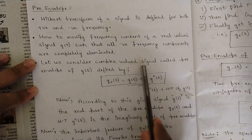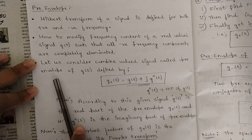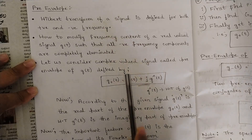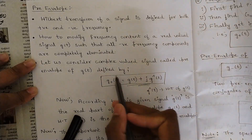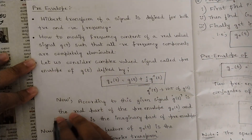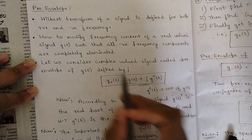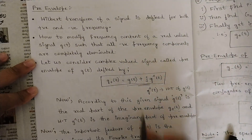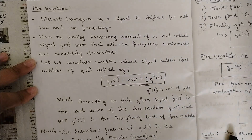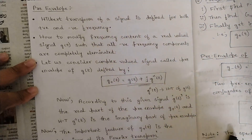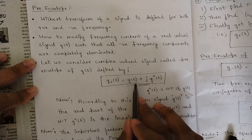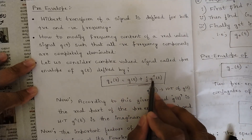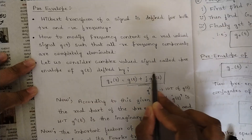Let us consider a complex-valued signal called pre-envelope G+(t). We have written only G+ because we are keeping the positive frequencies and negative frequency components are completely eliminated using the circuit called the envelope detector. G+(t) is equal to g(t) plus j·ĝ(t).